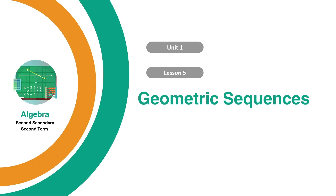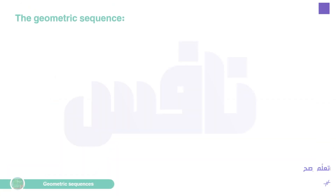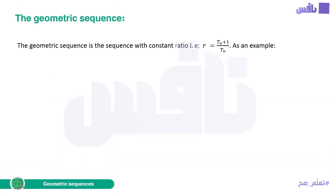Hello dear students and welcome back to our branch algebra unit 1 lesson 5: geometric sequence. Let's get started. The geometric sequence is a sequence with a constant ratio T(n+1) over T(n). As an example: 5, 10, 20, 40, and so on. Here R equals 2.